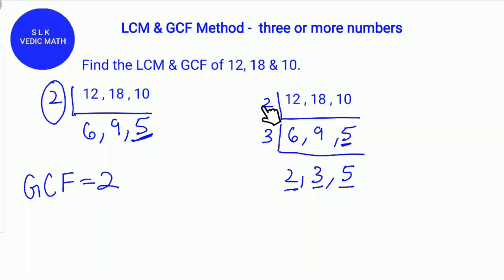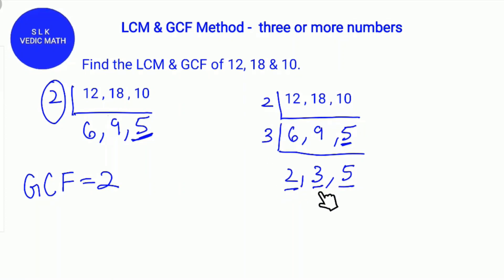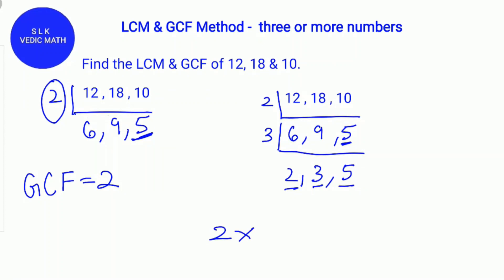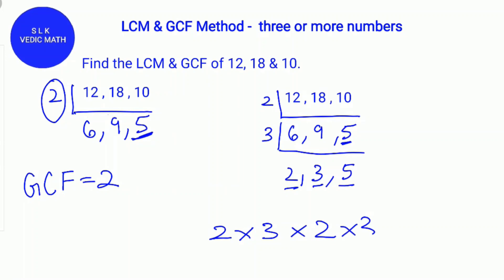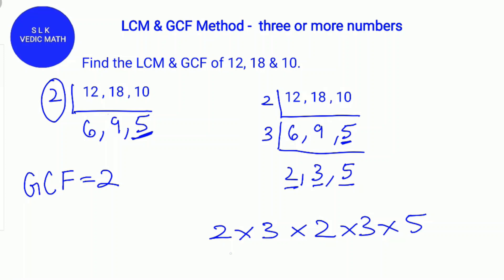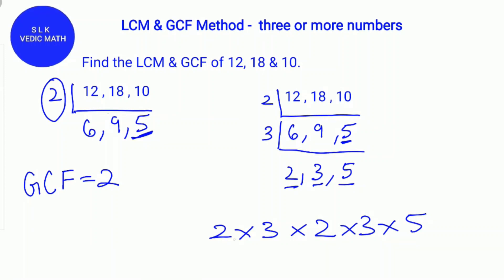Next, we multiply 2 times 3 times 2 times 3 times 5. So, 2 times 3 times 2 times 3 times 5 for the LCM. So, 2 times 3 is 6.